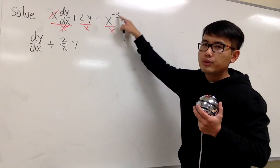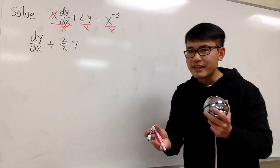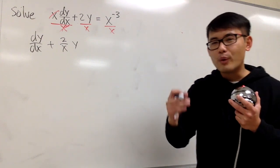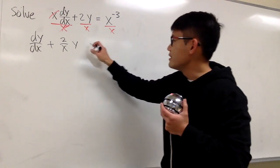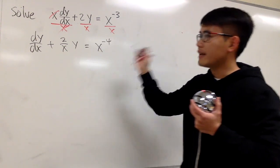And this right here, you know you have x to the negative 3, and over x. Altogether, you have x to the fourth power in the denominator, so I can say this is equal to x to the negative 4, like that.